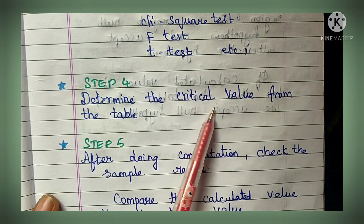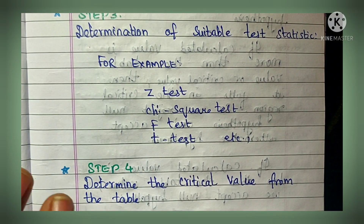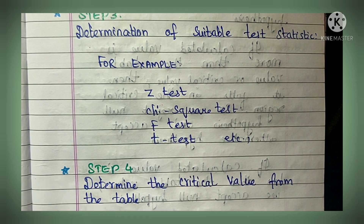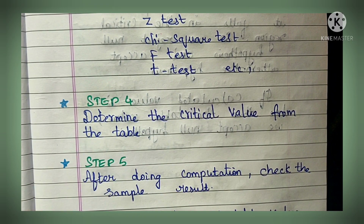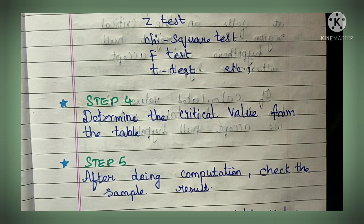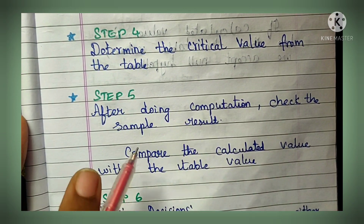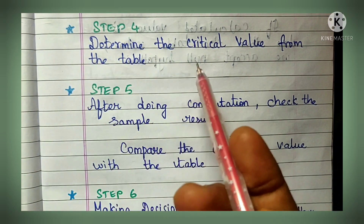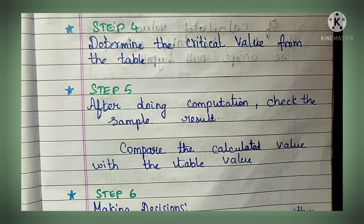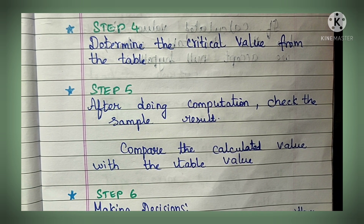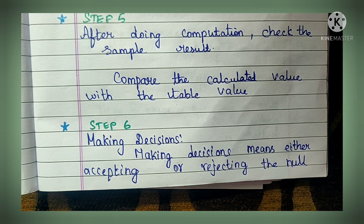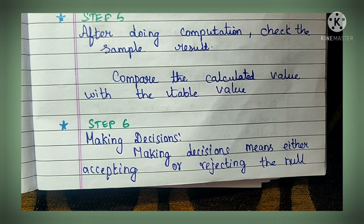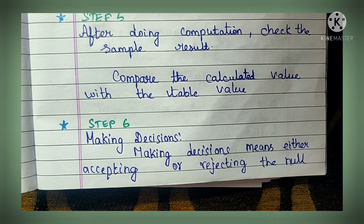Step four - determine the critical value from the table. From step three you will get a calculated value: if you used a z-test you get a calculated z-value, if t-test you get a calculated t-value. Then identify the degree of freedom and use it to find the critical value from the table. Step five - compare the calculated value with the table value at 0.05 level of significance. Step six - make a decision: if the calculated value is less than the table value, accept the null hypothesis.